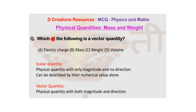Coming back to this question, volume is going to be a scalar quantity — option D — because you don't require direction to specify volume. Similarly, electric charge also does not require direction. So option A and option D, electric charge and volume, are both scalar quantities. What about mass and weight? How do you differentiate between them?